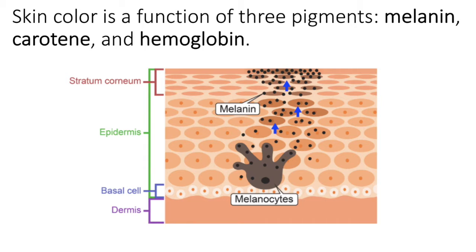Melanin is by far the most important of the three pigments. What we see pictured here is a very simple illustration of a melanocyte producing melanin and then depositing it in the upper layers of the epidermis.